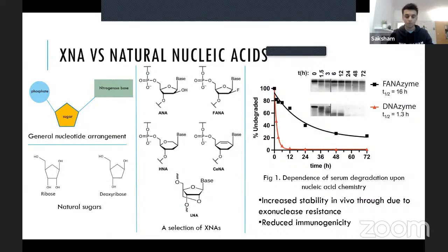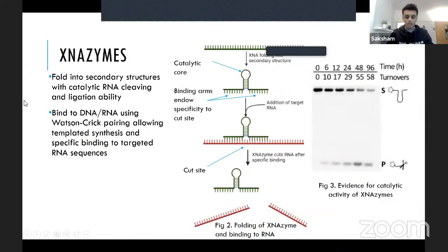Figure 1 shows that synthetic phanamizine degrades much more slowly than natural ionazine. There is also reduced immunogenicity for XNA-based oligos compared to natural nucleic acids. These benefits have been exploited in antisense oligonucleotide therapies. Today's focus is on the use of XNA in enzymes — XNA polynucleotides can form XNA enzymes, which are non-proteinaceous enzymes.